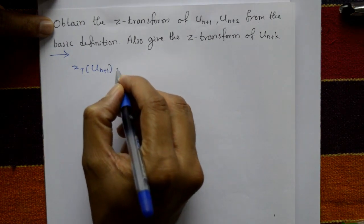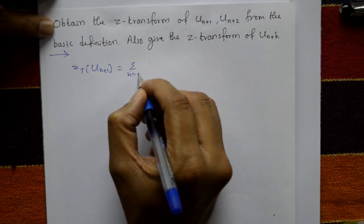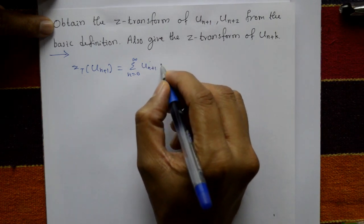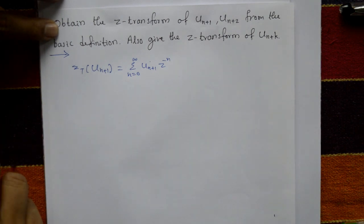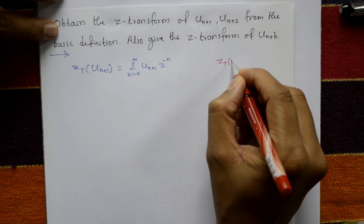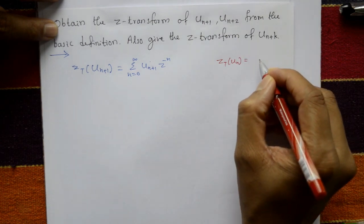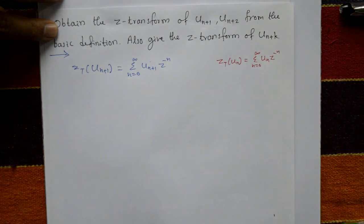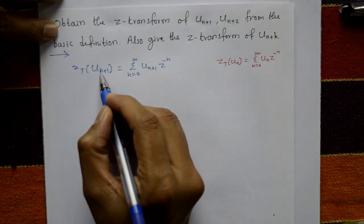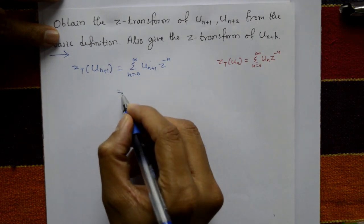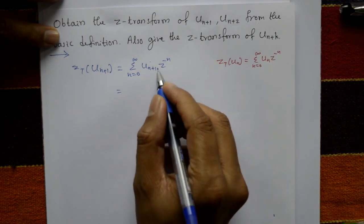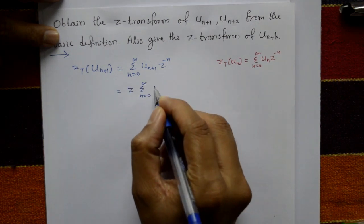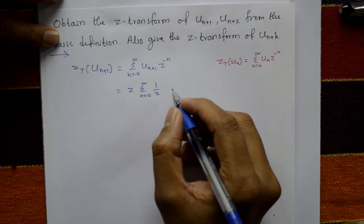The Z-transform of u(n+1) is equal to summation from n=0 to infinity of u(n+1) times Z raised to minus n. You know the definition: Z-transform of u(n) equals summation from n=0 to infinity of u(n) times Z raised to minus n. For u(n+1), the next step is to multiply by Z and divide by Z.